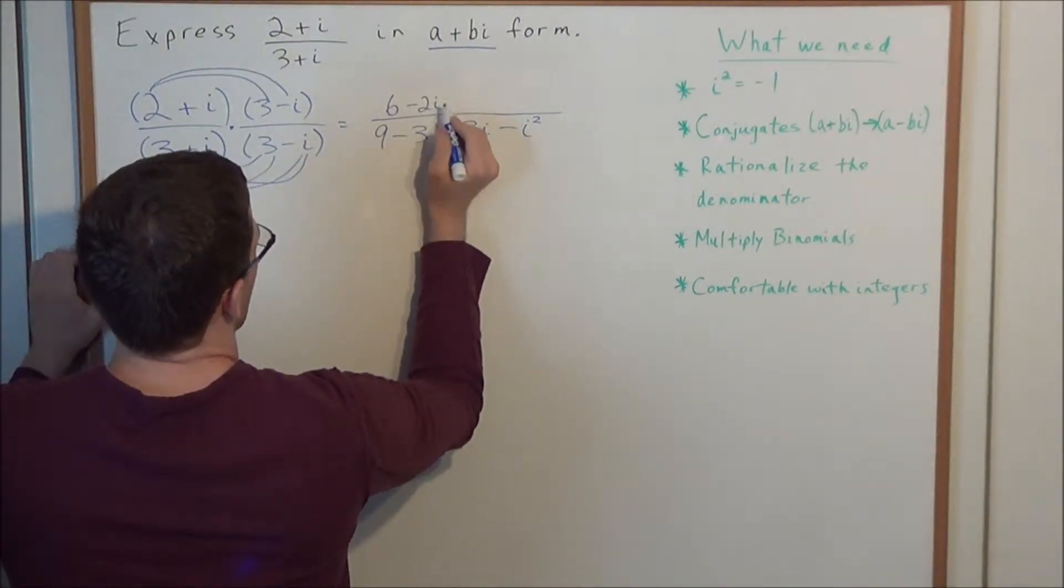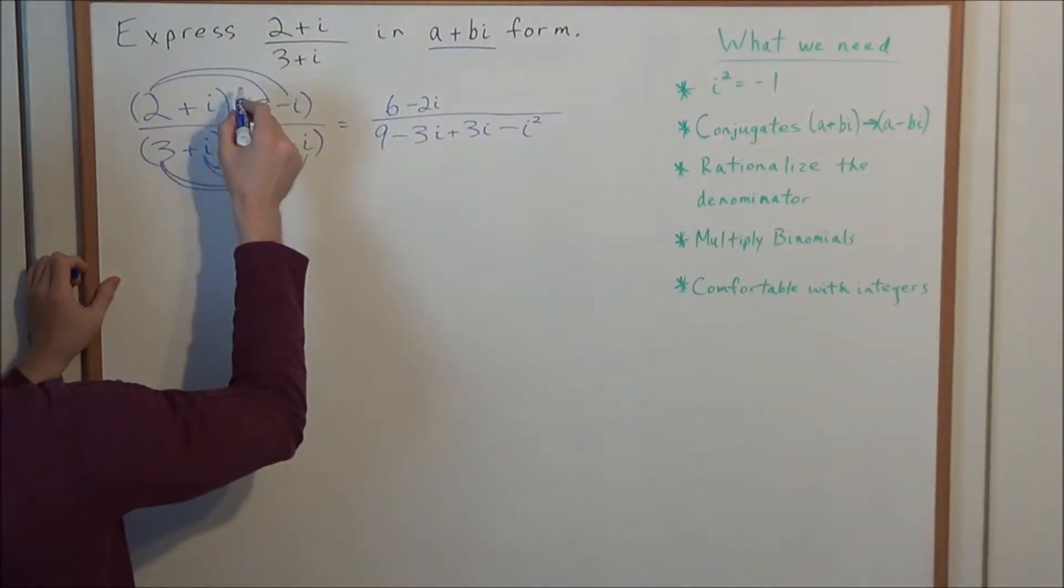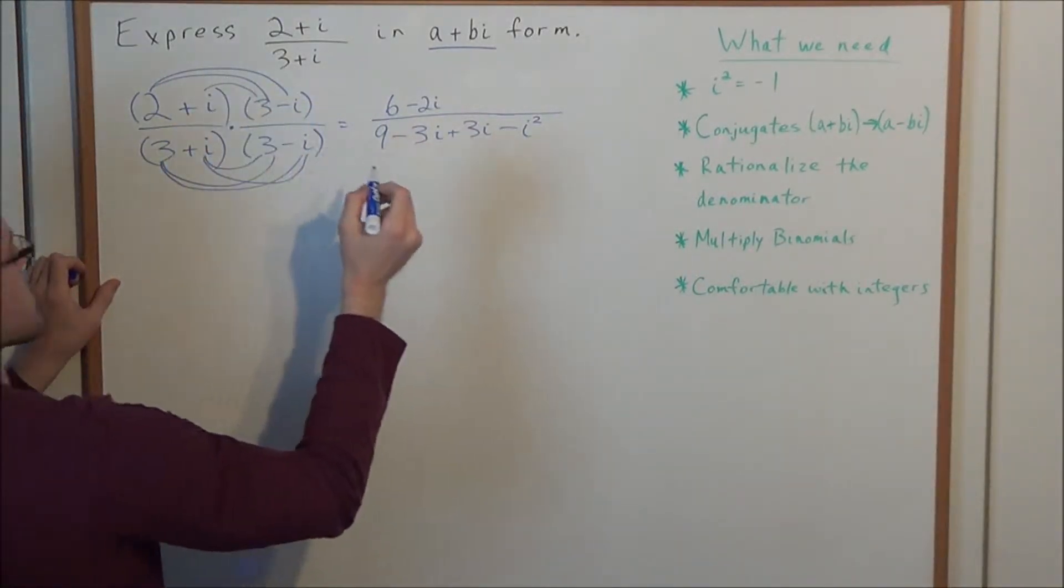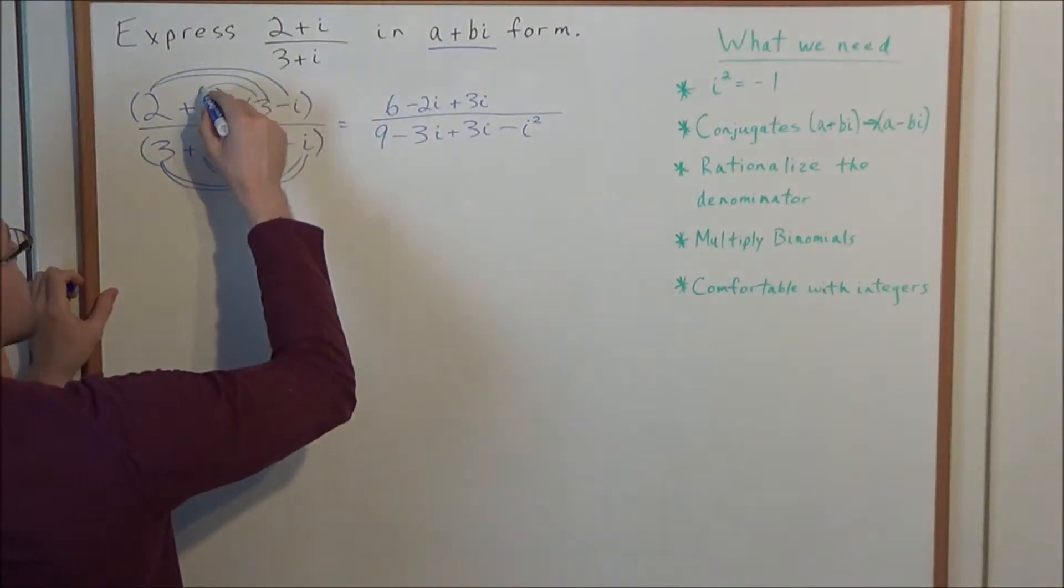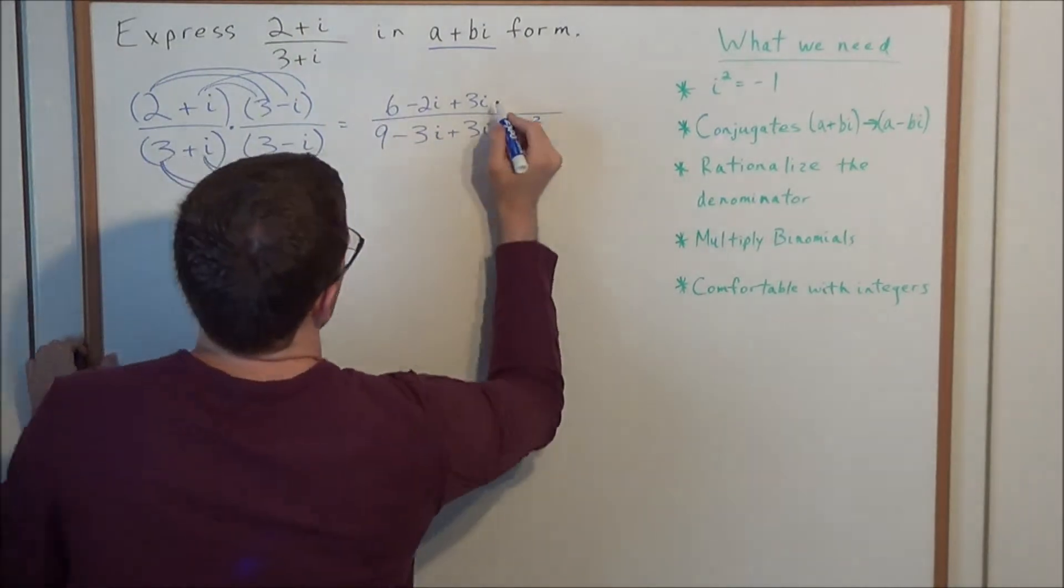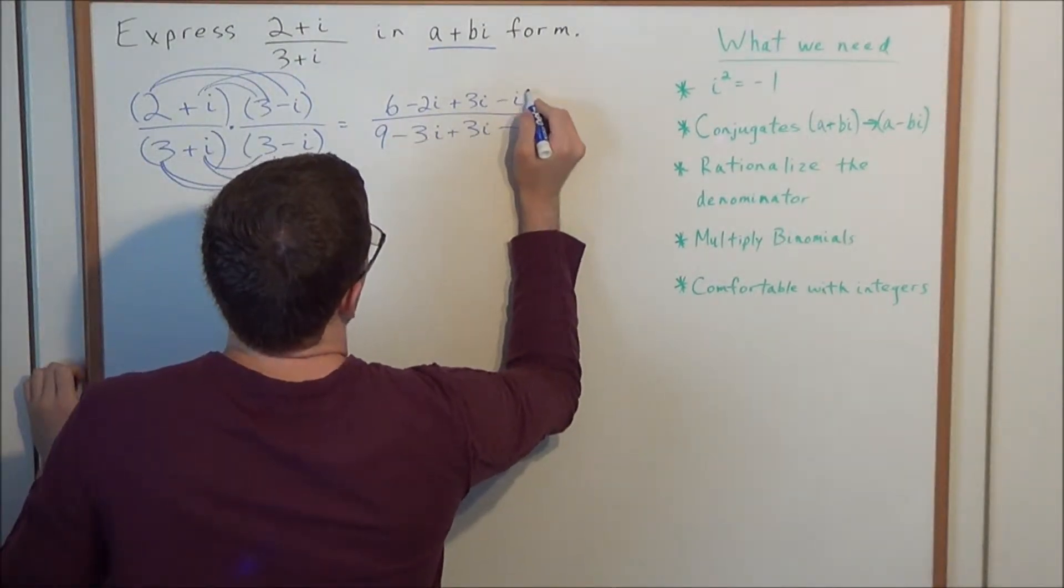We have a positive 3 times a positive i is a positive 3i. And last, we have positive i times a negative i is once again a negative i squared.